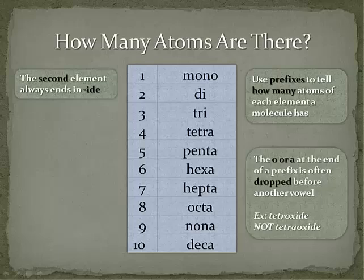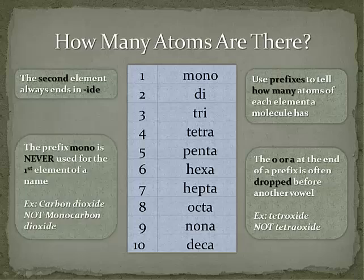If the prefix ends in an 'o' or 'a' and there's a vowel right after it, we drop that 'o' or 'a'. So if we're using four oxygens, instead of tetra-oxide we write tetroxide. If it's one oxygen, instead of mono-oxide it'd be monoxide, like carbon monoxide. Finally, the prefix mono is never used for the first element of a name. So if there's only one of the first element in a compound, we just use that element's name — we drop the mono. So carbon dioxide is carbon dioxide CO₂, not monocarbon dioxide.